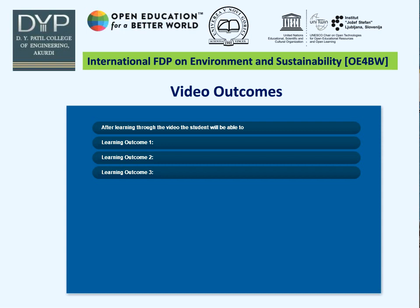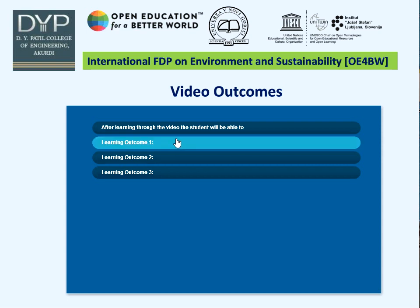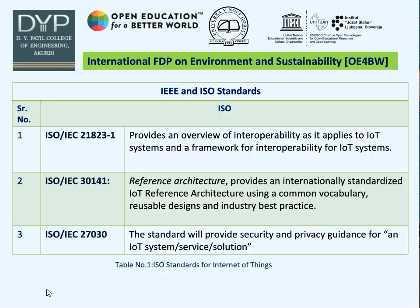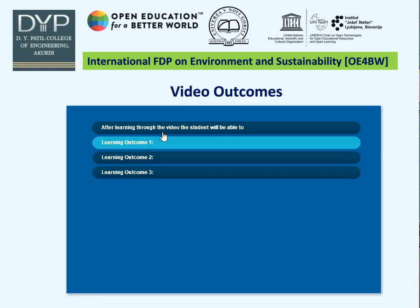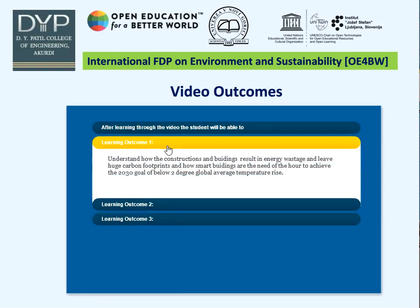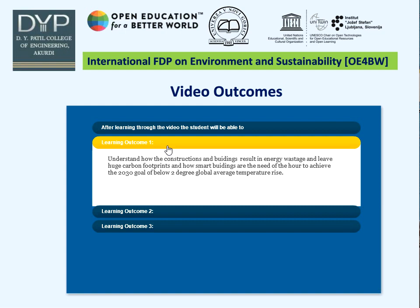Now let's look at the outcomes of today's session. Learning outcome number 1 is that students will be able to understand how constructions and buildings result in energy wastage and leave huge carbon footprints, and how smart buildings are the need of the hour to achieve the 2030 goal of below 2 degree global average temperature rise as per the Paris Agreement.